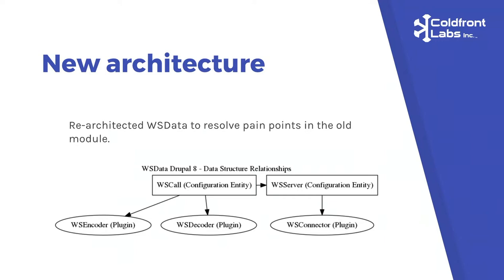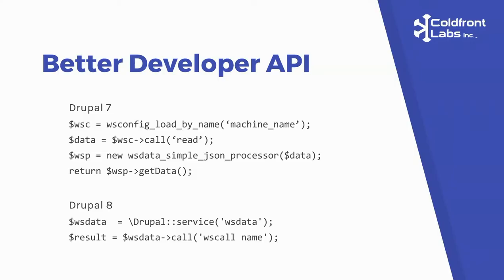These component diagrams make nice documentation. Here's an example of what code looks like to call WSData in D7. The first line loads the configuration entity, the second line calls it and makes a web service call bringing back data. But the data is unprocessable, so you have to load your processor, give the processor your data, it parses it, and then you ask the processor for the parsed data. There's no error handling in this code, but this is the minimum boilerplate. In D8, we felt you should be able to completely configure all of that — you only parse results one way, so we can do the whole thing for you.